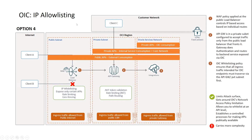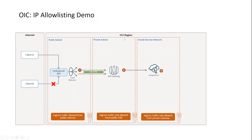Now let's do a quick demo of option four. I have a simple demo set up with a Hello World API from OIC, exposed to my gateway and then from my gateway to my WAF policy at the load balancer. This Hello World API is configured so that it can only be accessed by Client A's IP address. If the request comes from Client A, it will traverse through these three steps to my OIC integration and return the response. However, if the request comes from another IP address, the WAF policy will reject the request and return a 401.